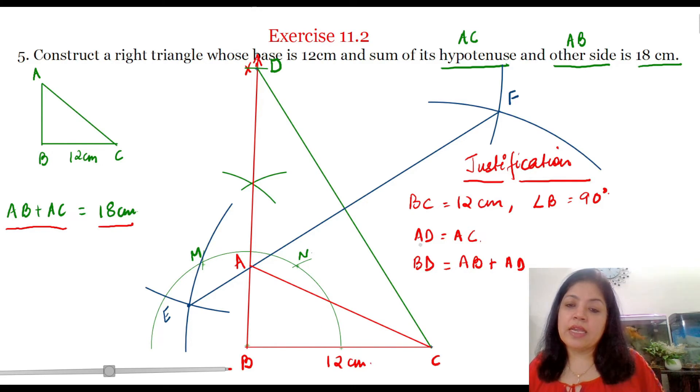Okay, now AD here is equal to AC. So in place of AD we can write down AC and hence we can say that BD is equal to AB plus AC. And since BD is equal to 18 cm by construction so we can say that AB plus AC is equal to 18 cm. Hence triangle ABC is the required triangle.